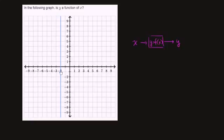So let's see if for this graph, whether for a given x, it spits out exactly one y. Well, the function seems to be only defined, so the domain of this function is x is equal to negative 2. That's the only place where we have a definition for it.